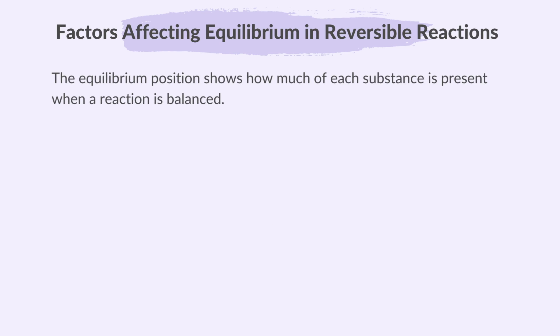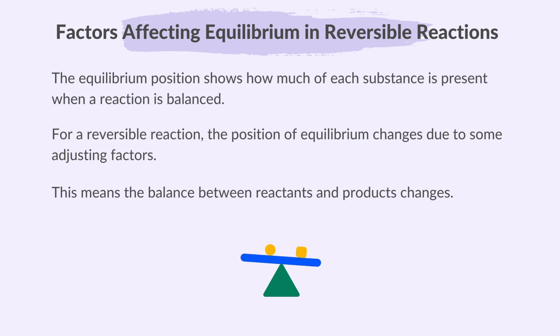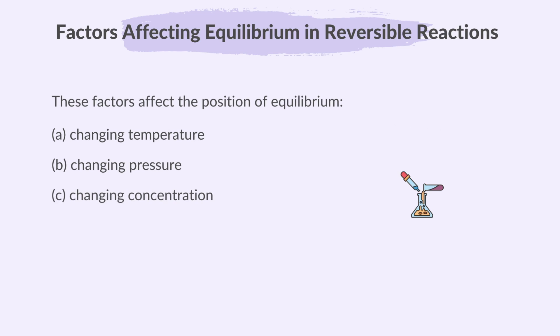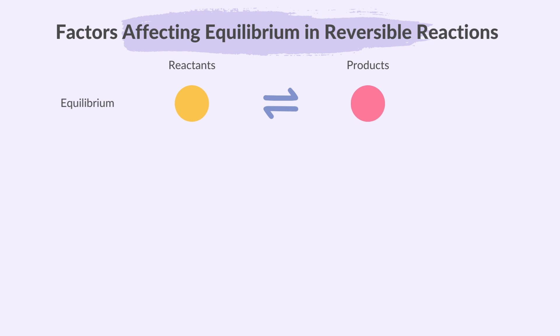The equilibrium position shows how much of each substance is present when a reaction is balanced. For a reversible reaction, the position of equilibrium changes due to adjusting factors — meaning the balance between reactants and products changes. These factors are: changing temperature, changing pressure, and changing concentration. When these external factors are introduced, the reaction system responds by trying to do the opposite to counteract the change and restore equilibrium.